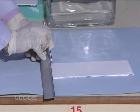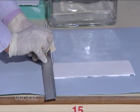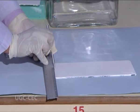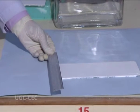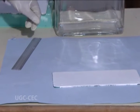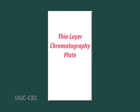Measure 1 cm from the bottom of the plate and draw a line across the plate using a pencil — this is the line of origin on which you will spot the sample. Under the line, mark lightly the name of the sample to be spotted. Leave enough space between samples so that they do not run together; about 4 samples on a 5 cm wide plate is advised.